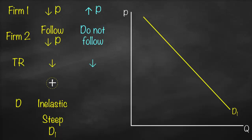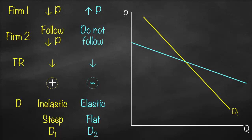The relationship here is a negative relationship between price and total revenue. Based on elasticity, we know that our demand curve is elastic because we have a negative relationship between price and total revenue. If we draw an elastic demand curve, it will be flatter. We will label it D2 in blue, drawing a flatter line.